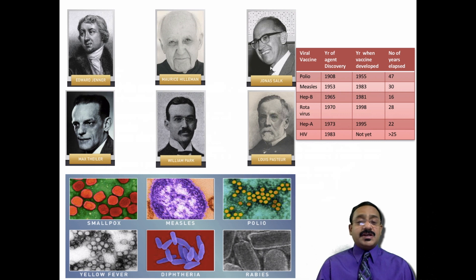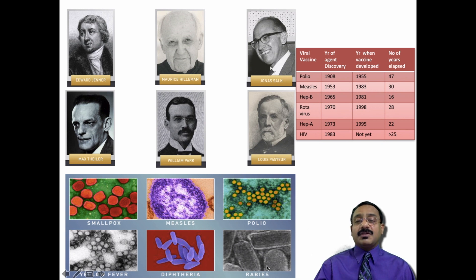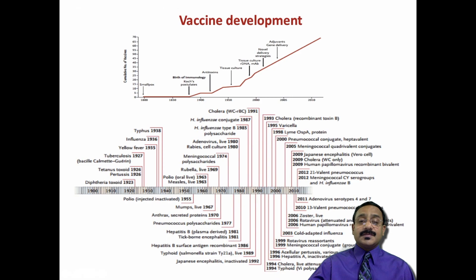Key pioneers in vaccine development include Edward Jenner for smallpox vaccination, Max Theiler for yellow fever, Maurice Hilleman for measles vaccine, William Park for diphtheria toxins and vaccines, Jonas Salk for the polio vaccine, and Louis Pasteur for rabies. The first polio vaccine was discovered in 1908, and since the first HIV vaccine came in 1983, more than 25 years elapsed between these milestones. Vaccine development started from smallpox in the early 1800s using cowpox material inoculated into humans.